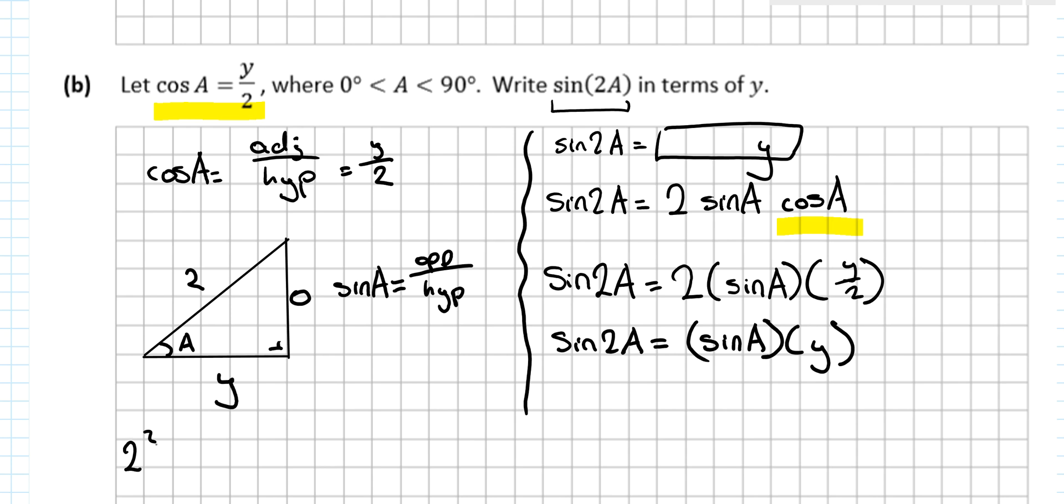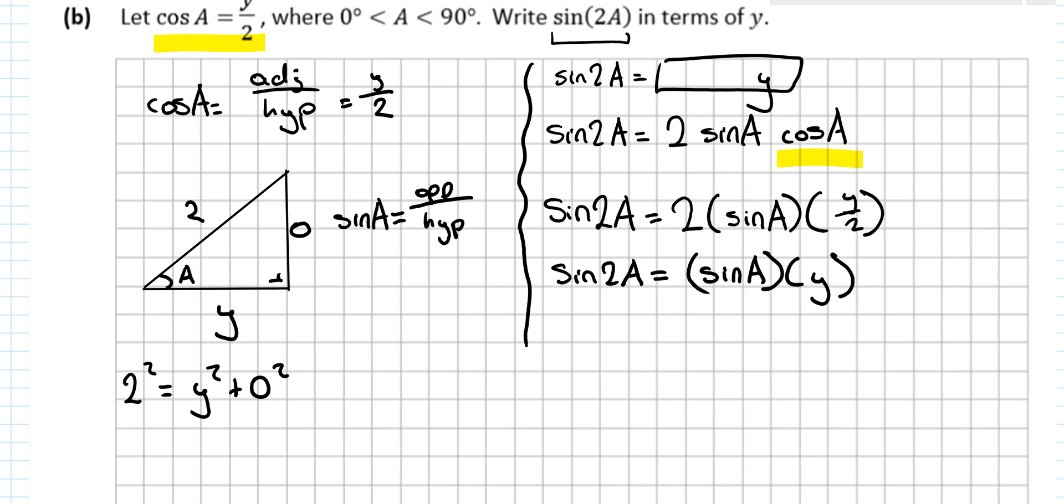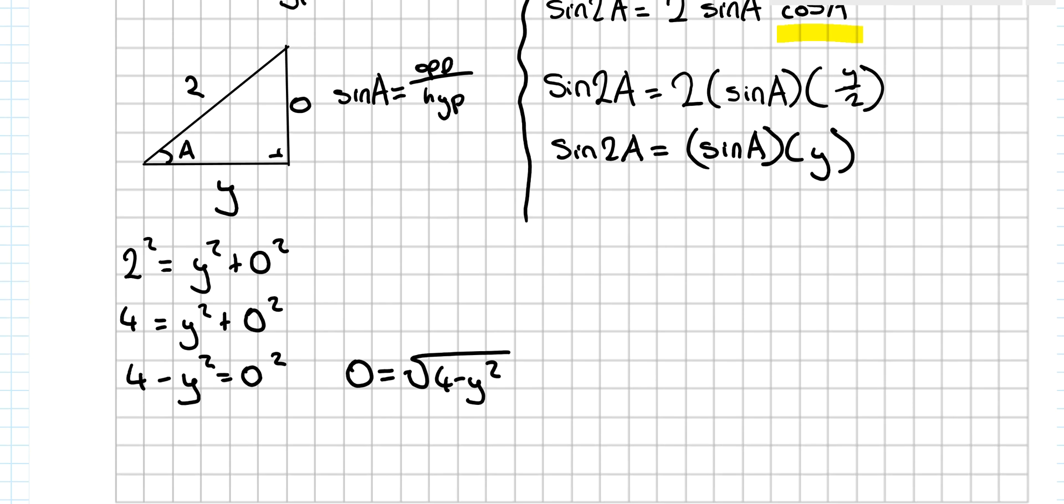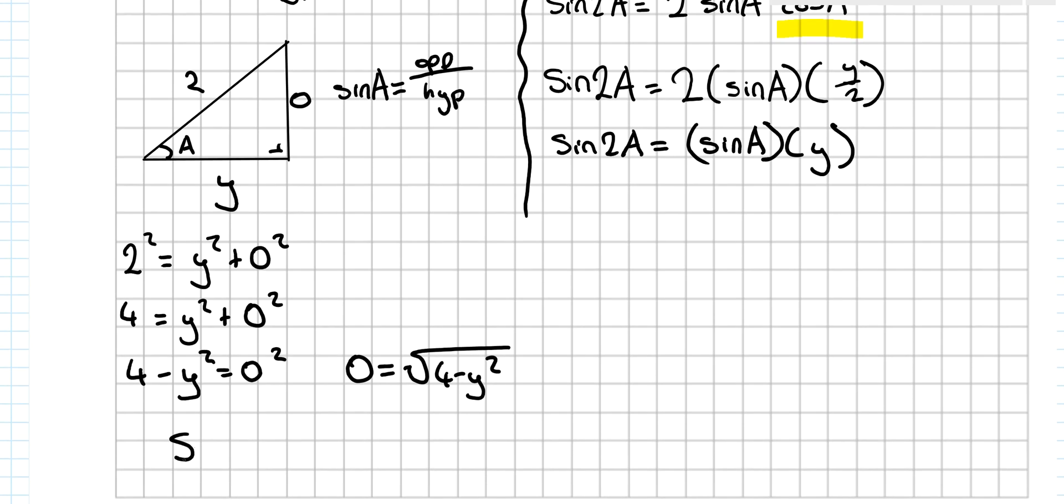And I know that root 2 squared is equal to y squared plus O squared. So that's 2 equals y squared plus O squared. 2 minus y squared is equal to O squared. O is equal to the square root of 2 minus y squared. So then what would sin A be? Sin A would be opposite over the hypotenuse, which is square root of 2 minus y squared all over root 2.